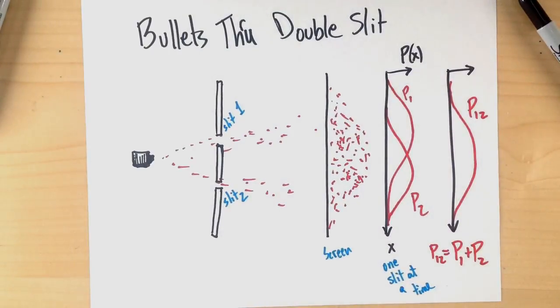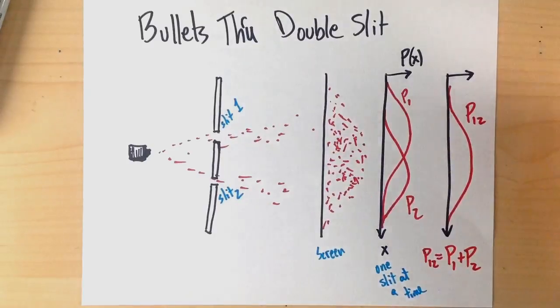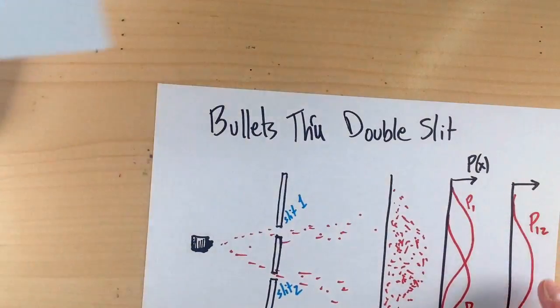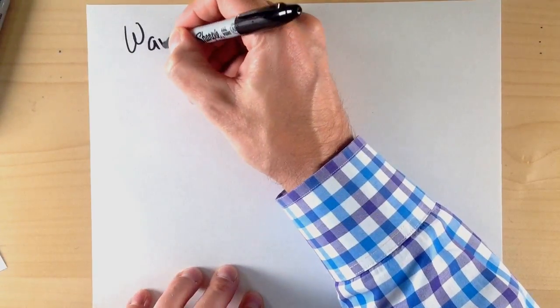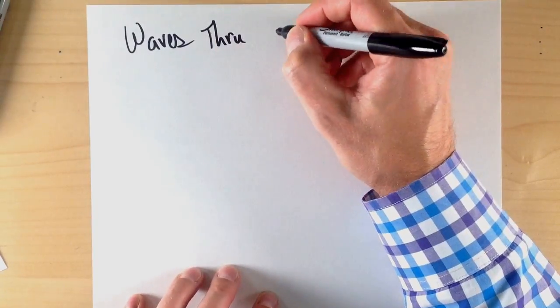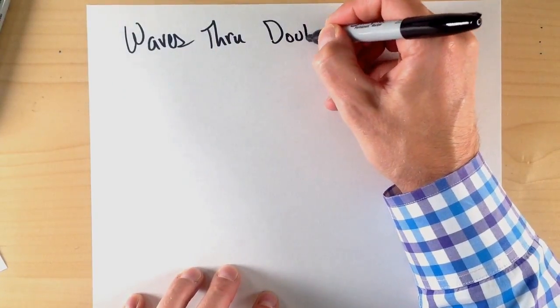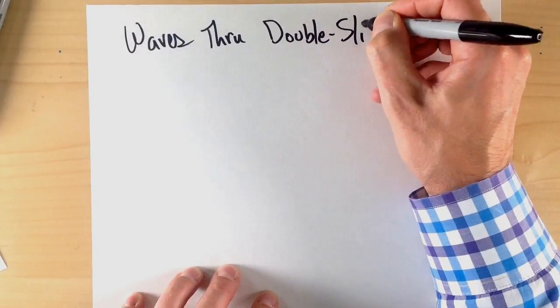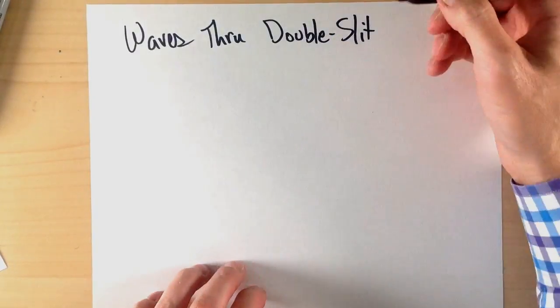So that's what we should expect to happen with things that act just like particles, like bullets, baseballs, and things like that. Now, what happens as another point of comparison with a wave or something that we know is a wave? So let's talk about waves through a double slit.